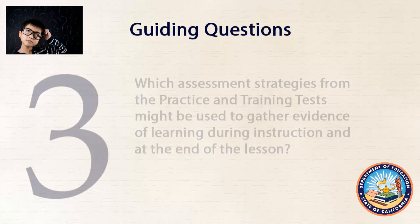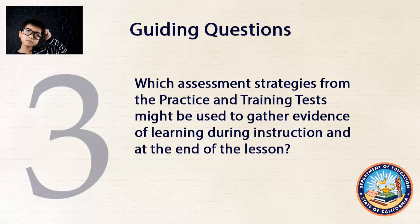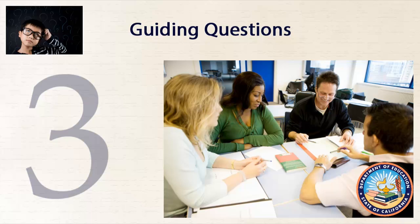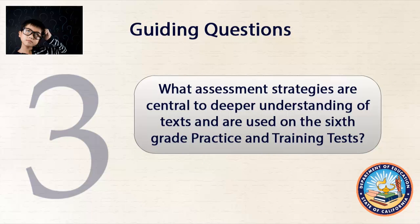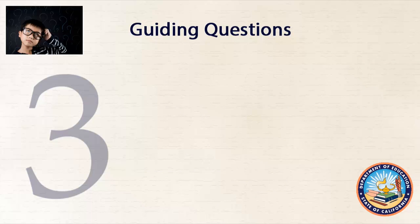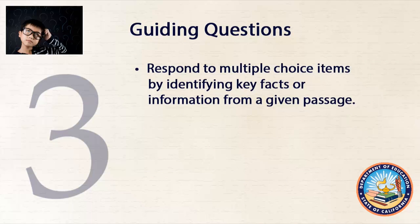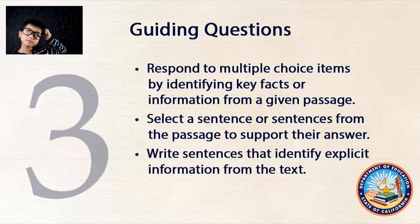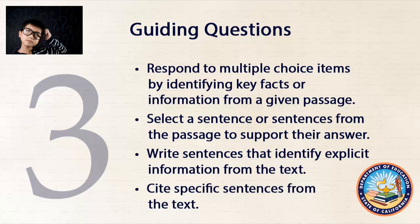Guiding Question 3: Which assessment strategies from the practice and training tests might be used to gather evidence of learning during instruction and at the end of the lesson? At this point, teacher teams determine what assessment strategies could be incorporated into instruction. Teams review the practice and training test to learn what students will experience at that grade level. The sixth grade ELA practice test asks students to respond to multiple choice items by identifying key facts or information from a given passage and selecting a sentence or sentences from the passage to support their answer. Students are also asked to write sentences that identify explicit information from the text and to cite specific sentences from the text that support their answer. After review, teachers identify the assessment strategies that they feel will provide the best evidence of the students' learning in the lesson.